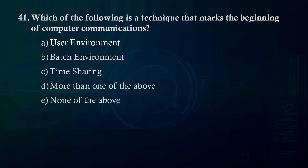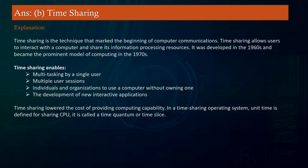Which of the following is a technique that marks the beginning of computer communications? Time-sharing allows users to interact with a computer and share its information-processing resources. It was developed in the 1960s and became the prominent model of computing in the 1970s. Time-sharing enables multitasking by a single user, multiple user sessions, and organizations to use a computer without owning one. In a time-sharing operating system, unit time is defined for sharing CPU — called a time quantum or time slice.